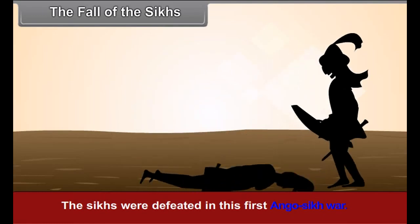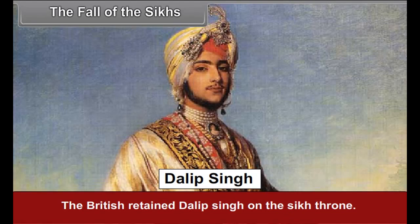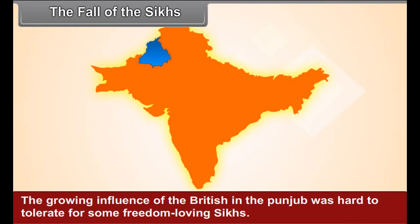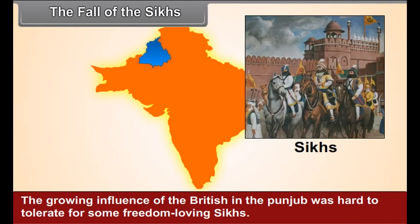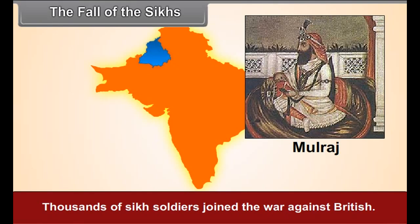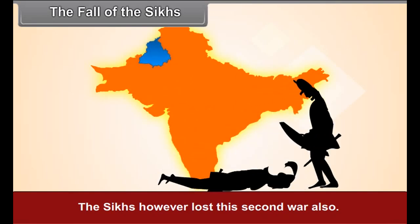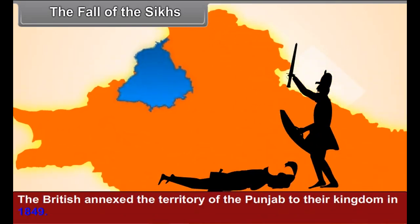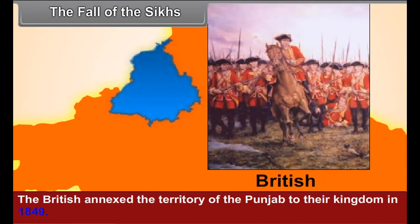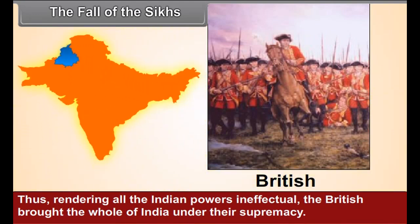The Sikhs were defeated in the First Anglo-Sikh War. The British retained Dalip Singh on the Sikh throne. However, the growing British influence in the Punjab was hard to tolerate for some freedom-loving Sikhs. Mulraj, the chieftain of Multan, rose against the British, and thousands of Sikh soldiers joined the war. The Sikhs, however, lost the second war also. The British annexed the territory of the Punjab to their kingdom in 1849. Thus, rendering all the Indian powers ineffectual, the British brought the whole of India under their supremacy.